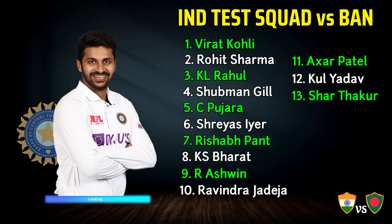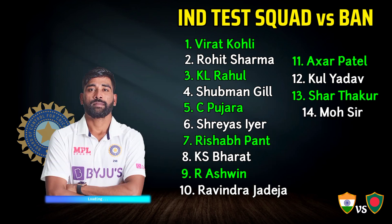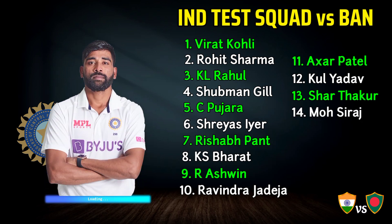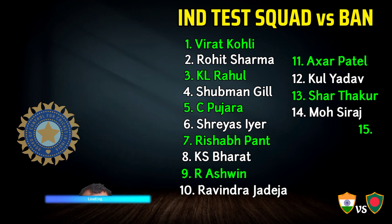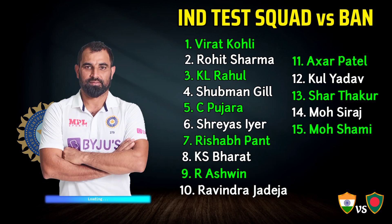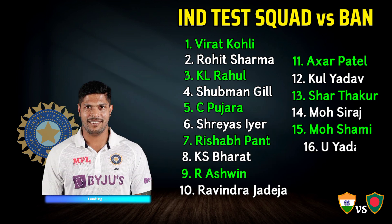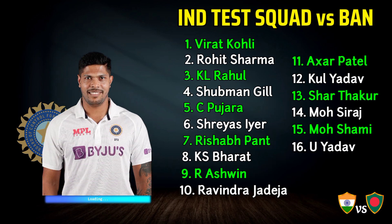Number 13: Shardul Thakur. Number 14: Mohammed Siraj. Number 15: Mohammed Shami. Number 16: Mohammed — fast bowlers.